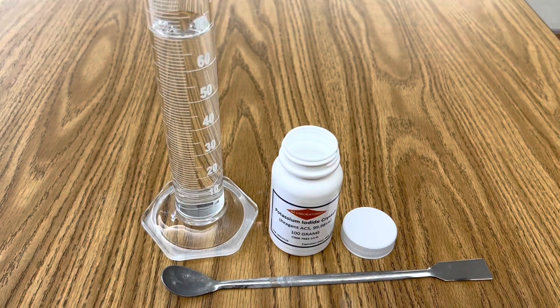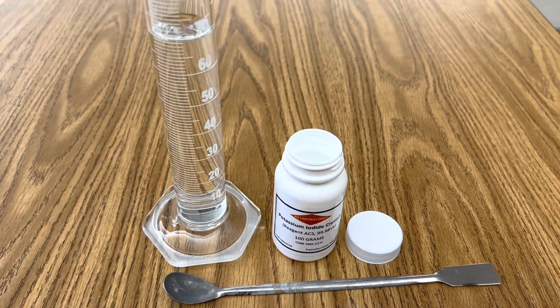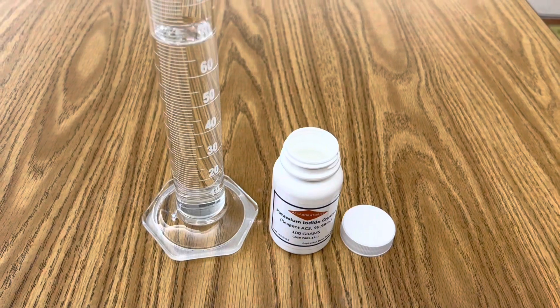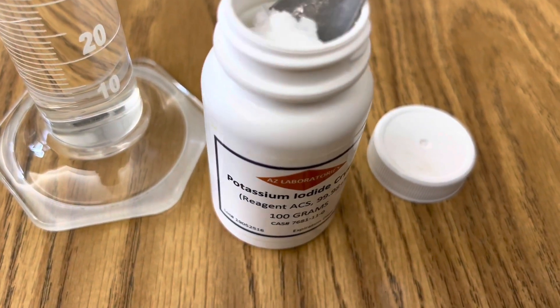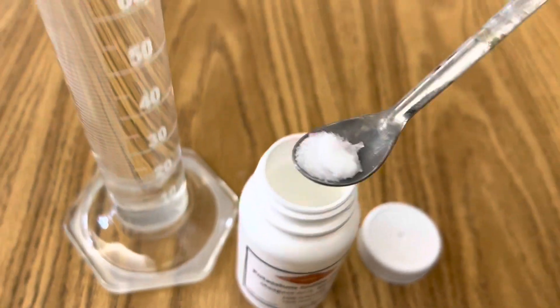The next step is to fill your graduated cylinder with 70 milliliters of distilled water and add four grams of potassium iodide and stir your solution until it's completely aqueous.